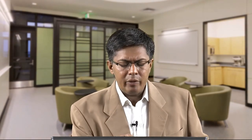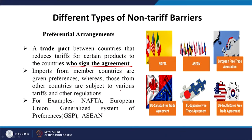Another kind of non-tariff barrier is preferential arrangement — a trade pact between countries that reduces tariffs for certain products to the countries who sign the agreement. If you are a member of the agreement, the tariff is different and reduced compared to countries not part of the agreement. Imports from member countries are given preferences whereas those from other countries are subject to various tariff and other regulations. Examples include NAFTA, European Union, and Generalized System of Preferences (GSP).